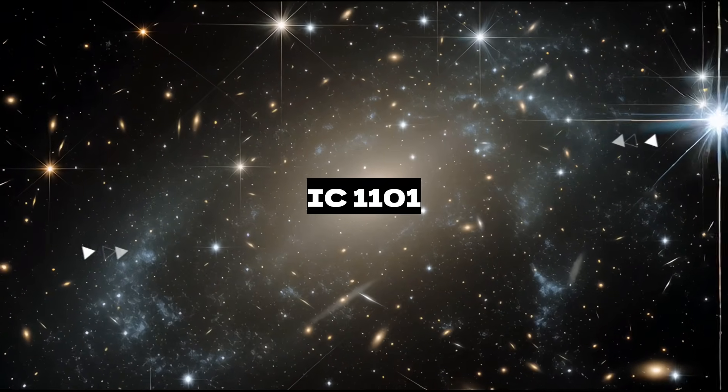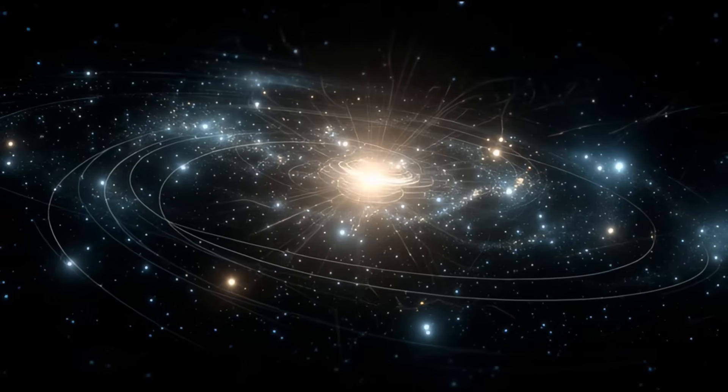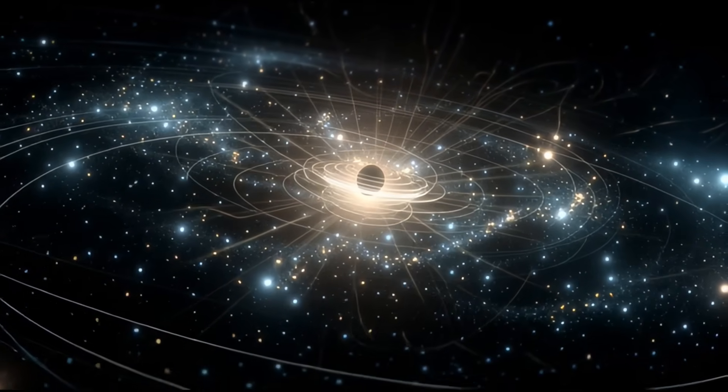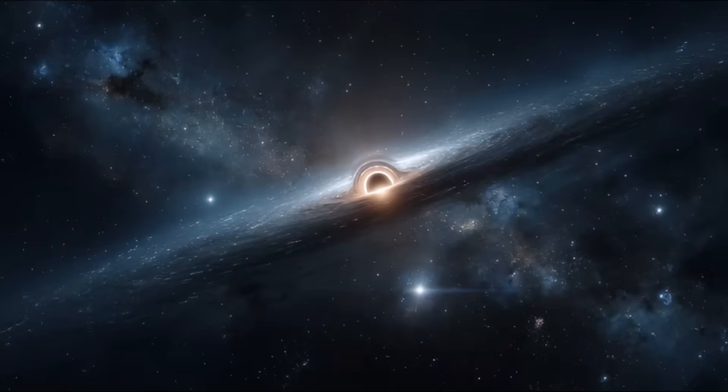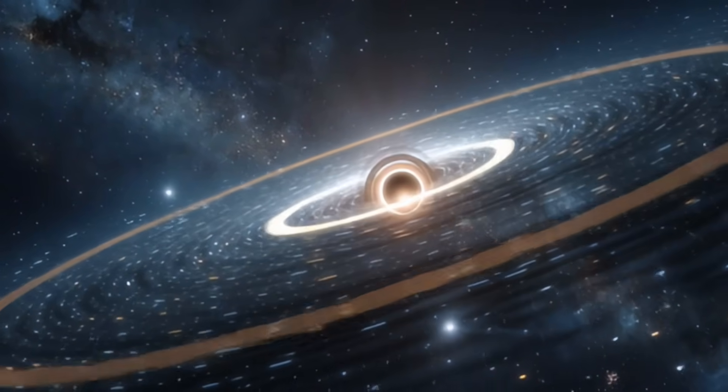That's why IC-1101, despite hosting 100 trillion stars, is what astronomers call a dead galaxy. It's barely making new stars anymore. The yellowish glow it emits comes from old, cooler stars slowly fading away.